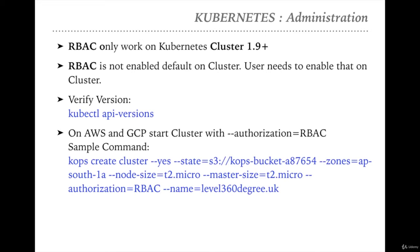You can enable RBAC when starting your cluster. If you're using AWS or GCP, you can pass the parameter '--authorization=RBAC'. For example, the kops create cluster command includes '--state' to define your S3 bucket, '--zones' to define your zone, '--node-size' set to t2.micro, '--master-size' set to t2.micro, and '--authorization=RBAC', followed by the cluster name.